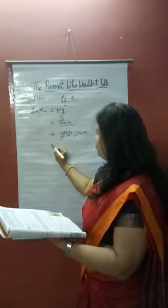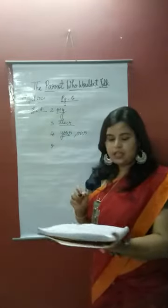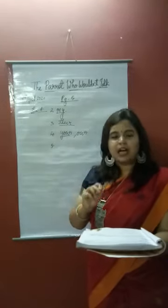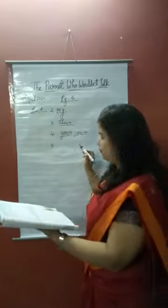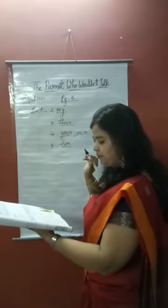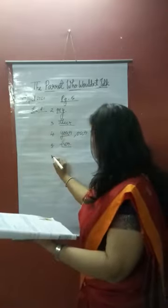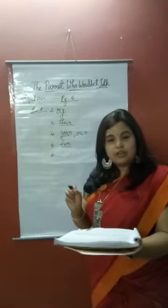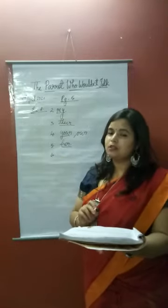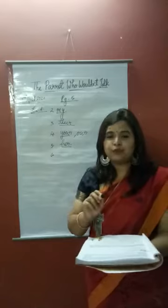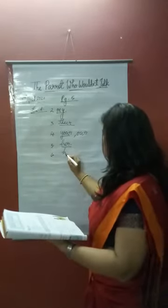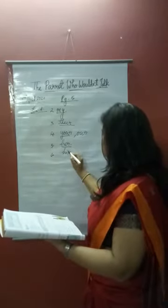Question number 5: Lata has lost her keys. The answer is 'her'. Underline the word 'her'. Number 6: Ravi is talking to his friend. To whom is he talking? His friend. The answer is 'his'. Underline the word 'his'.